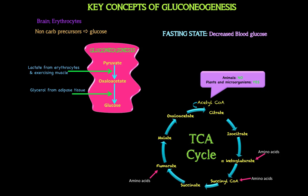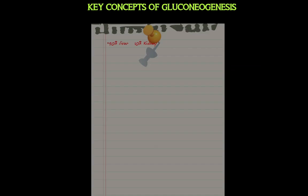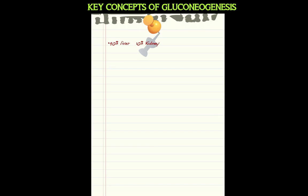Glucogenic amino acids break down into TCA intermediates, ultimately giving rise to oxaloacetate, which feeds back into gluconeogenesis in the liver. Gluconeogenesis takes place predominantly in the liver — about 90% of it. As fasting continues with prolonged fasting, the kidney starts to help out a little, but the most significant amount of gluconeogenesis occurs in the liver.